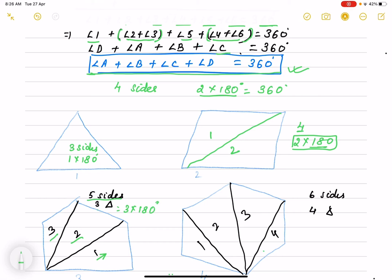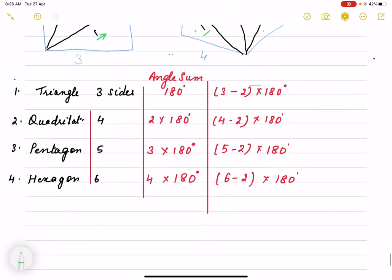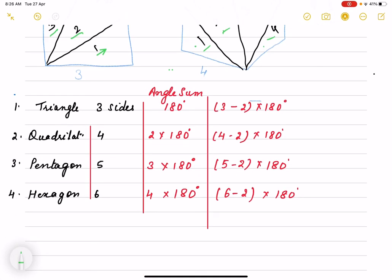Here it is hexagon 6 sides and we can divide it into 1, 2, 3, 4 triangles. And it will be 4 times 180 degrees. So we can find, just find out what is the interior angle sum of that.